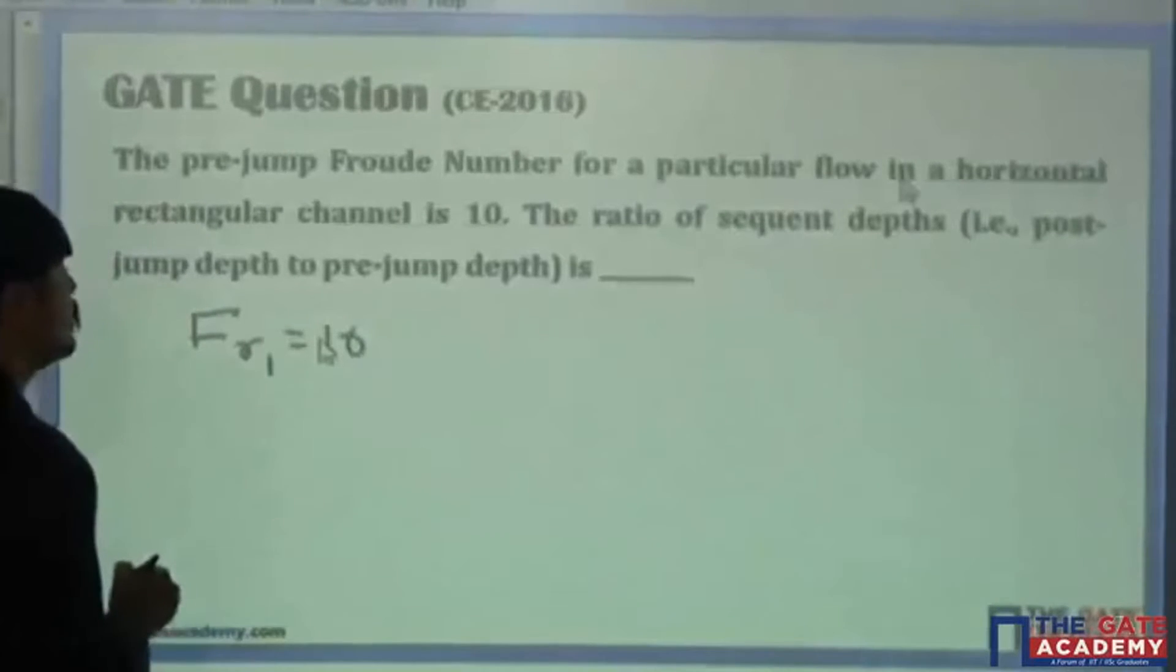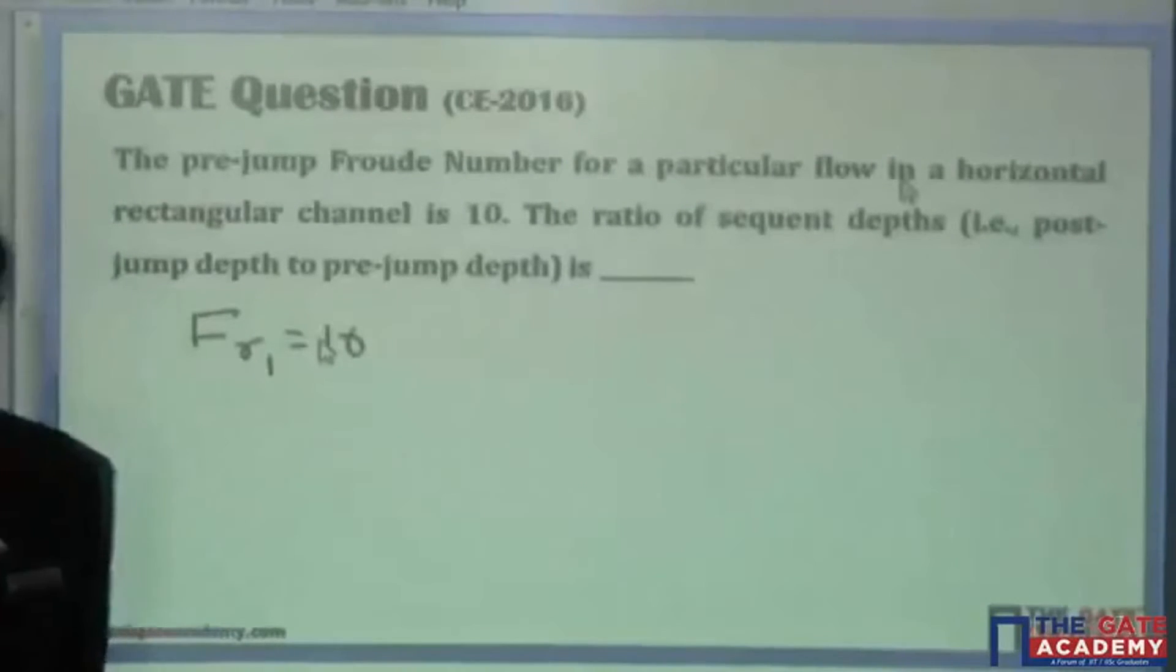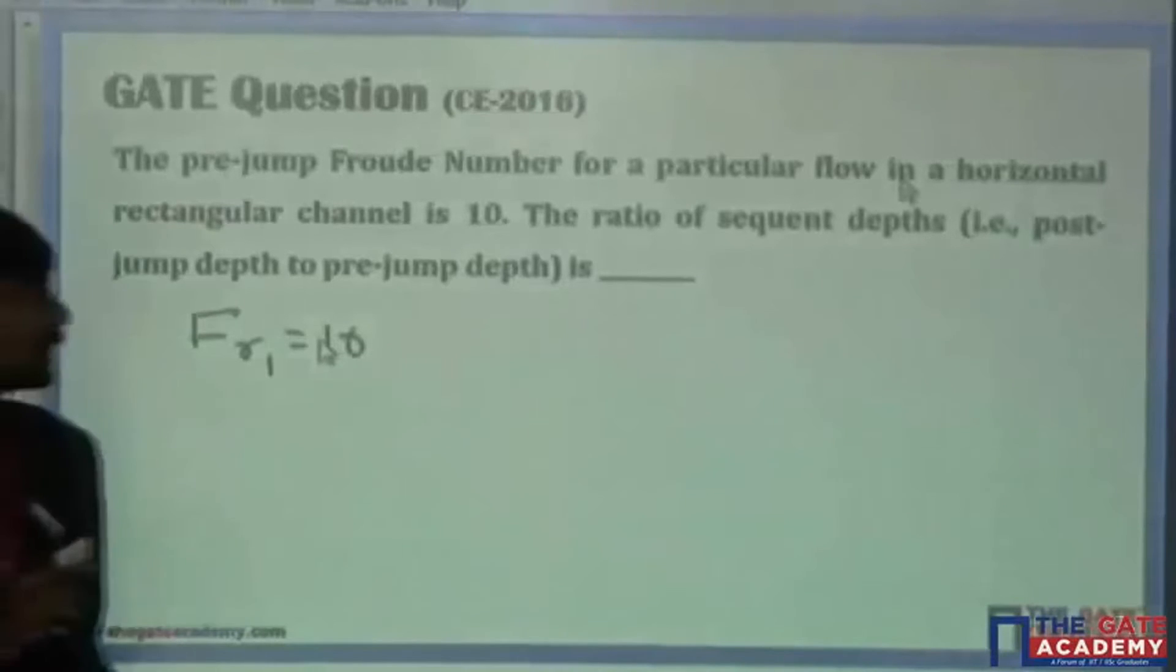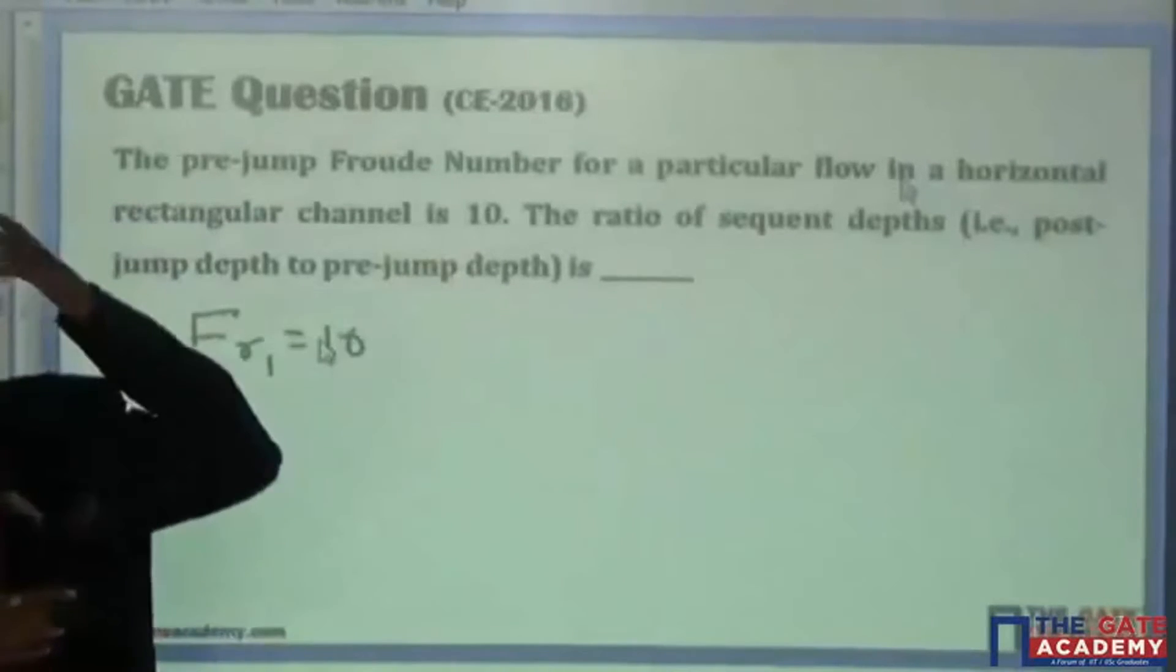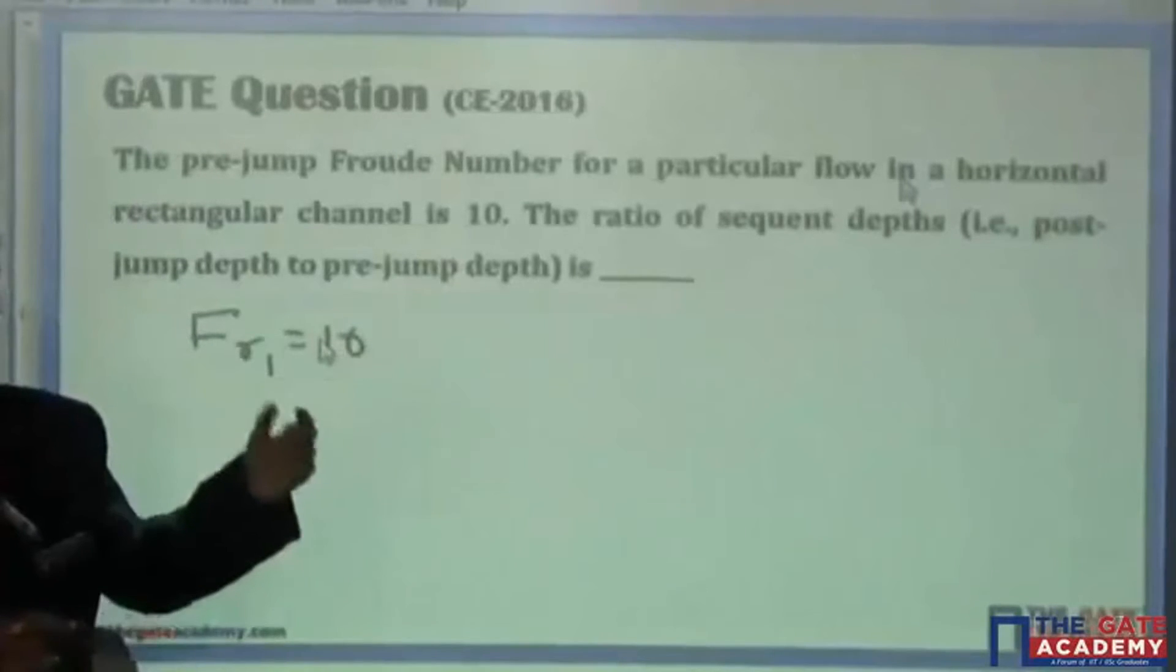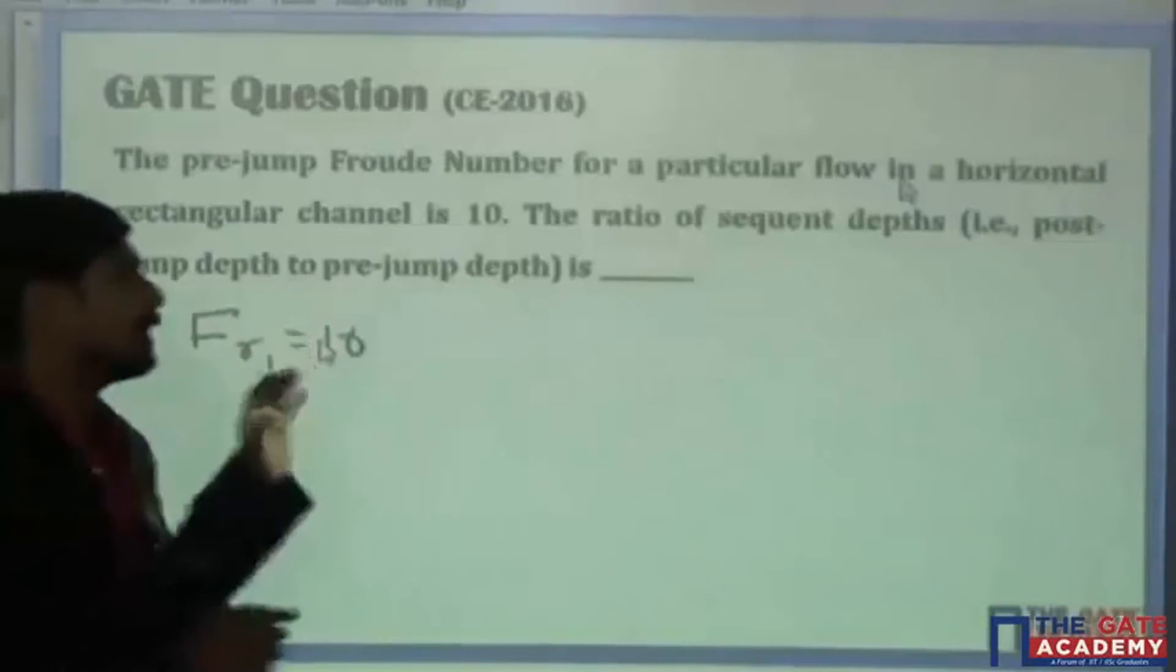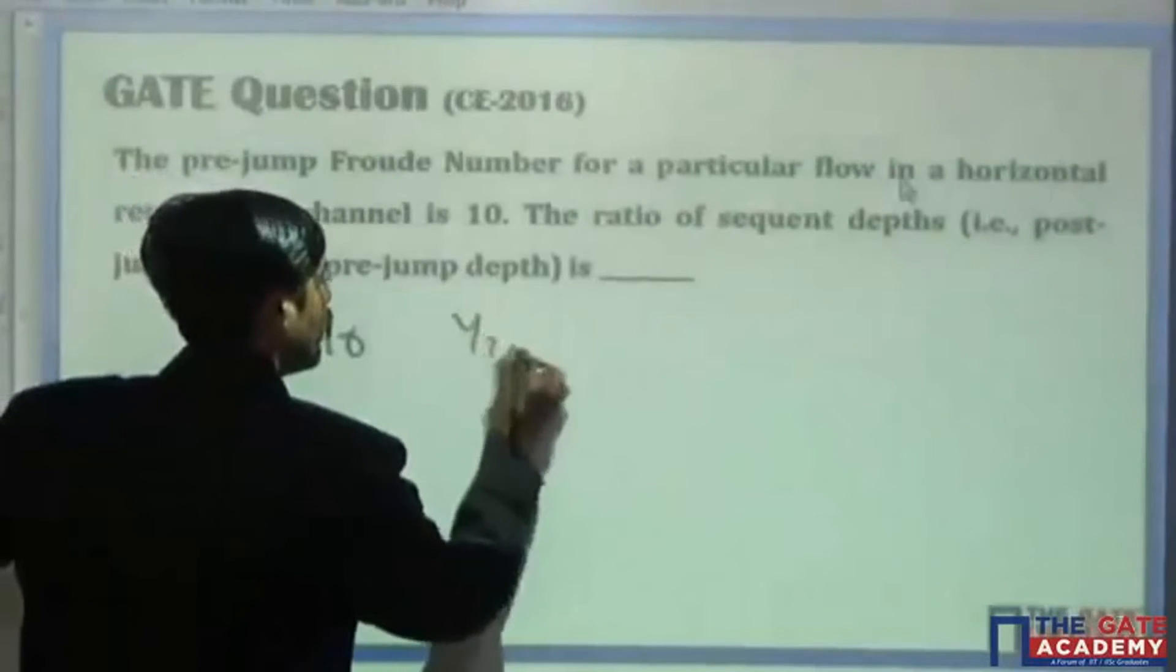Sequent depths - post-jump to pre-jump, that also is mentioned, very easy to solve. The ratio of sequent depths, post-jump to pre-jump depth, post-jump means y2 by y1.